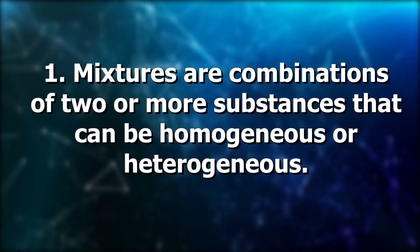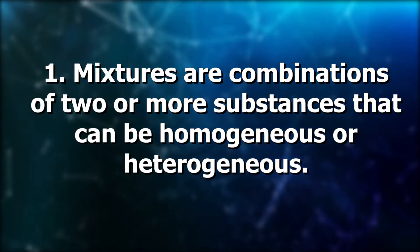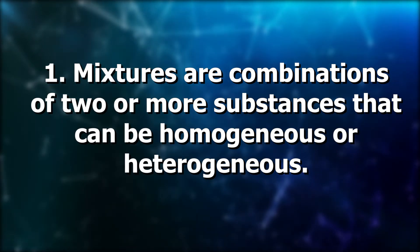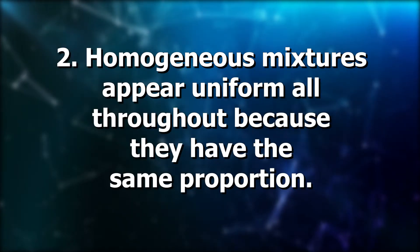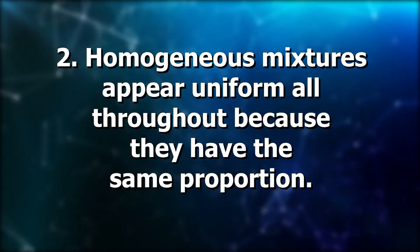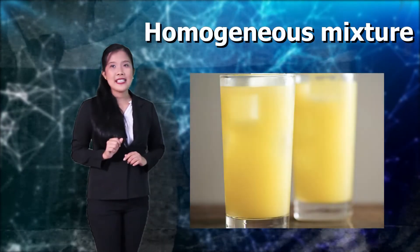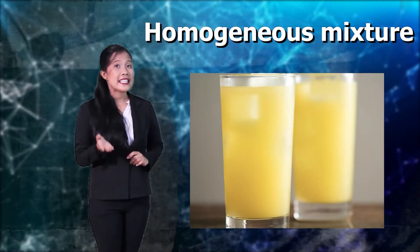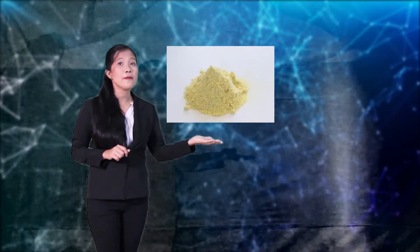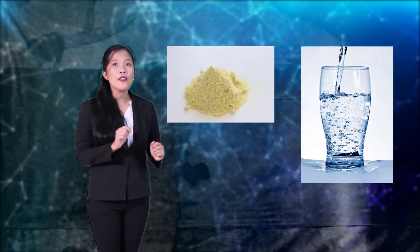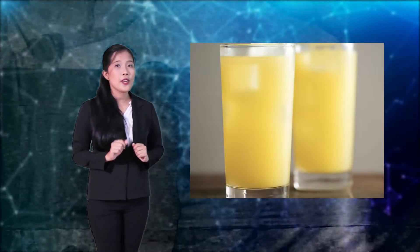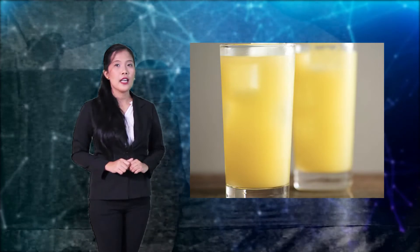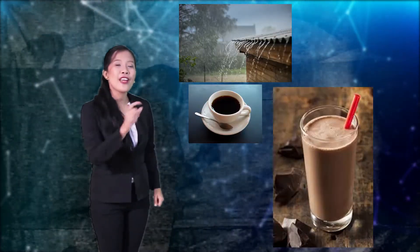From the video clip, we learned the following. Mixtures are combinations of two or more substances that can be homogeneous or heterogeneous. Homogeneous mixtures appear uniform all throughout because they have the same proportion. A lemon juice is an example of a homogeneous mixture. It is homogeneous because as you mix the lemon powder into water, both substances become the same phase, appear uniform, and have the same proportion. Some other examples are rainwater, coffee, and your favorite chocolate drink.